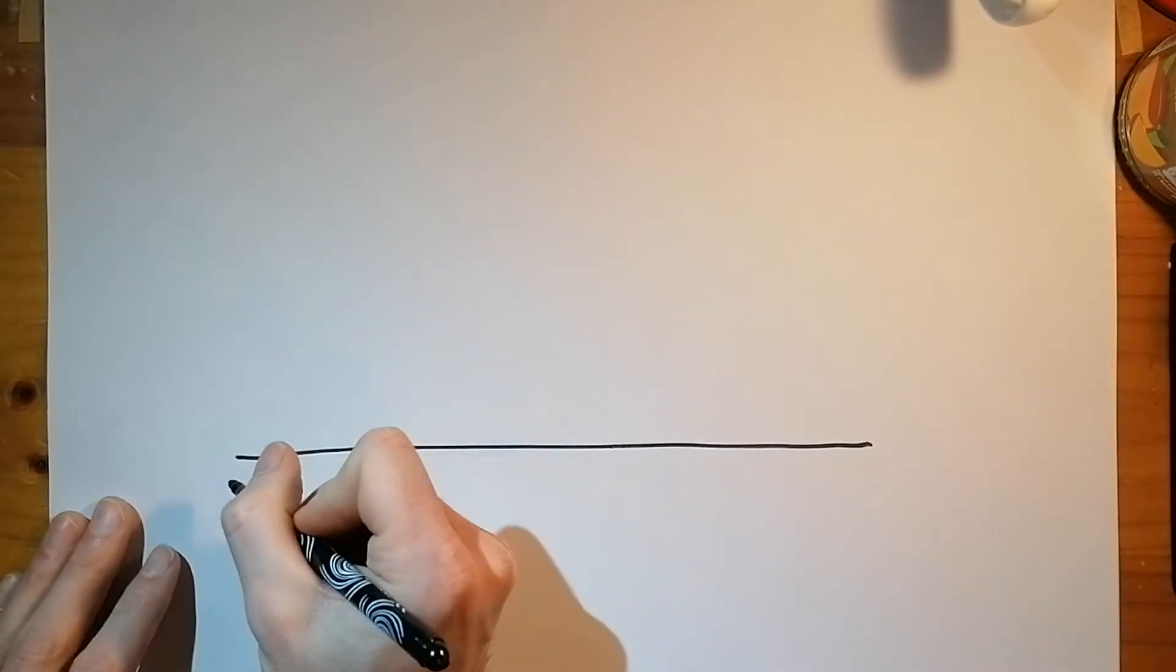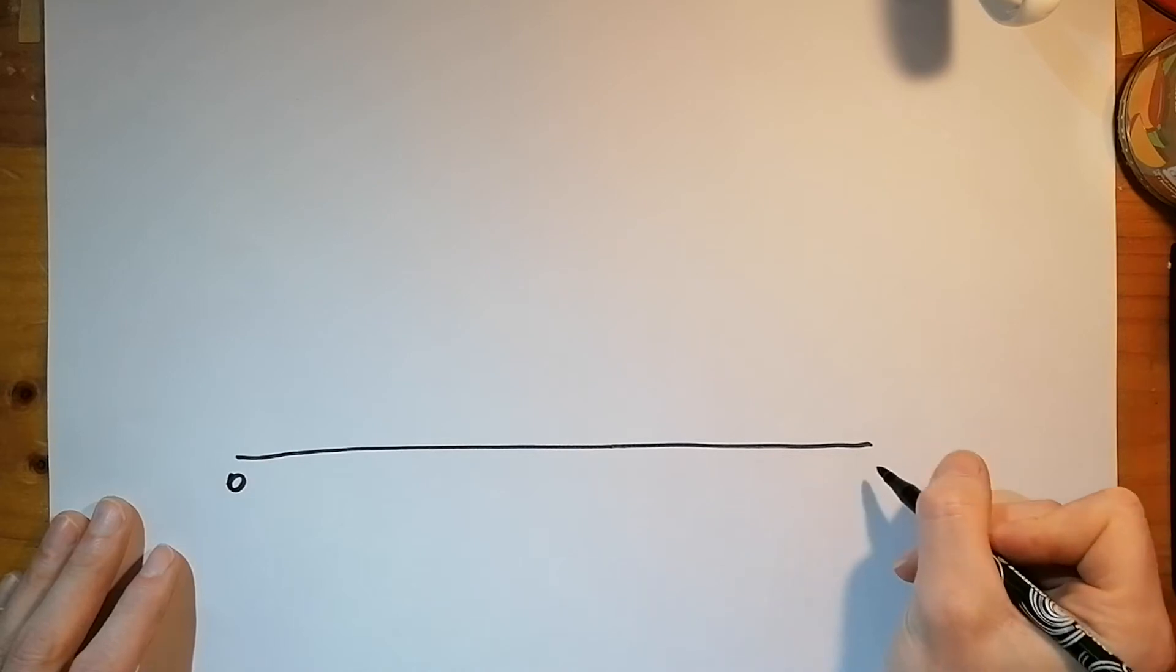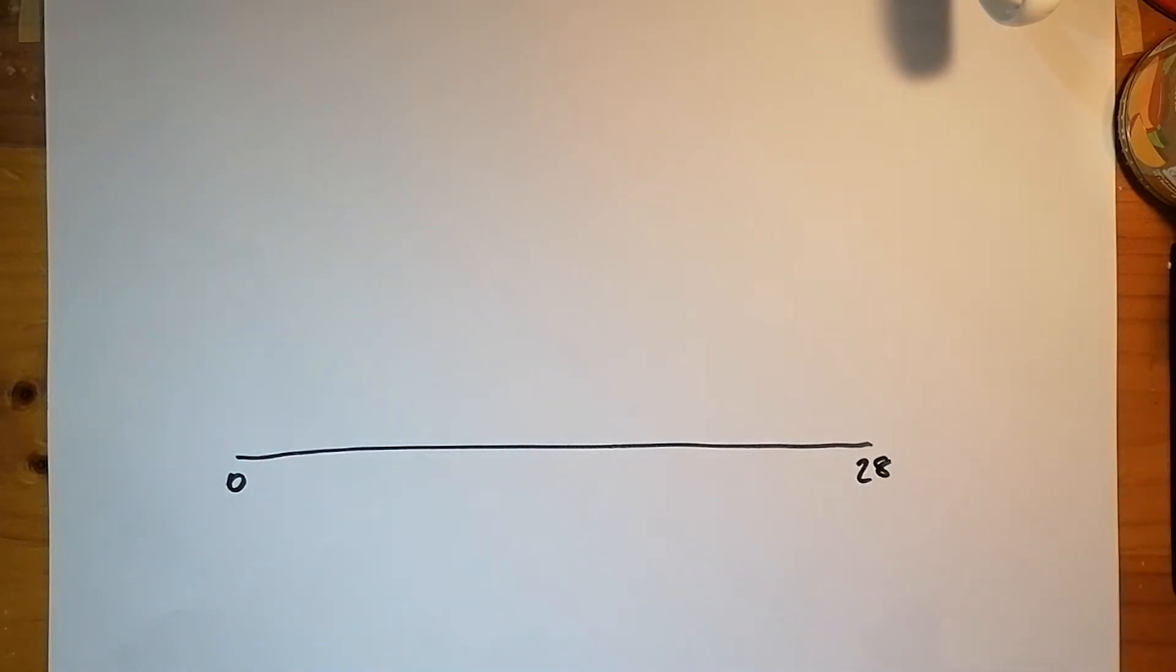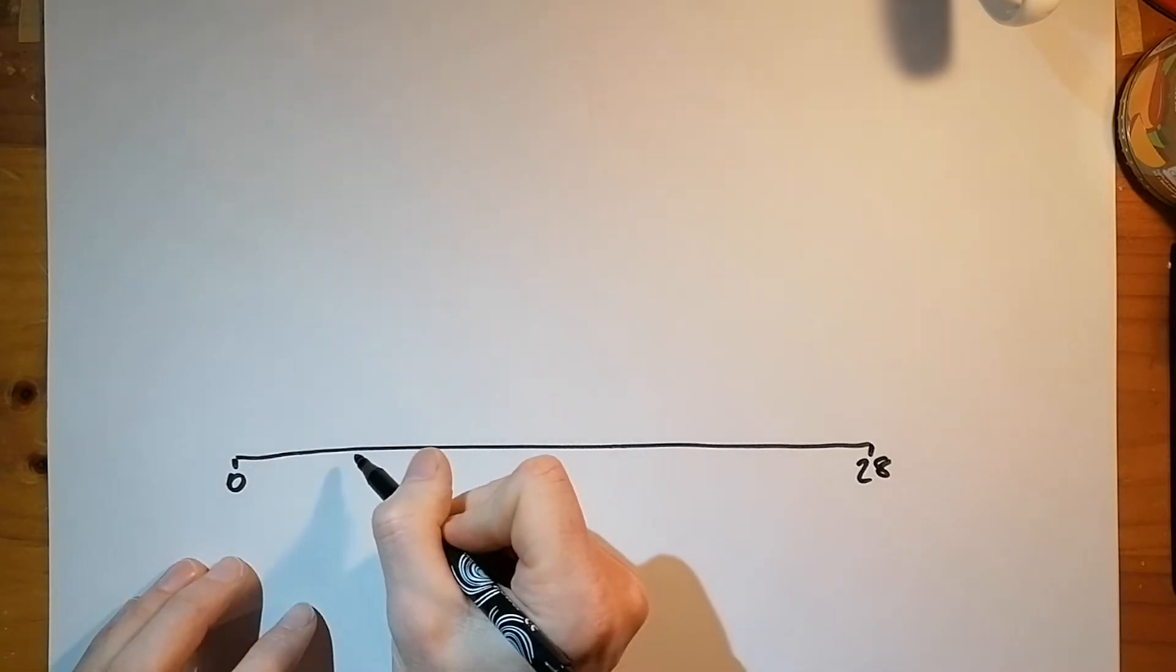And if we were to draw a graph over time where this is zero days and this is 28 days. And just a caveat on this, 28 days is the textbook length of a menstrual cycle. Obviously not all females are textbook and they'll have different length cycles. But this is, I even hesitate to say that it is typical, but let's say an average.